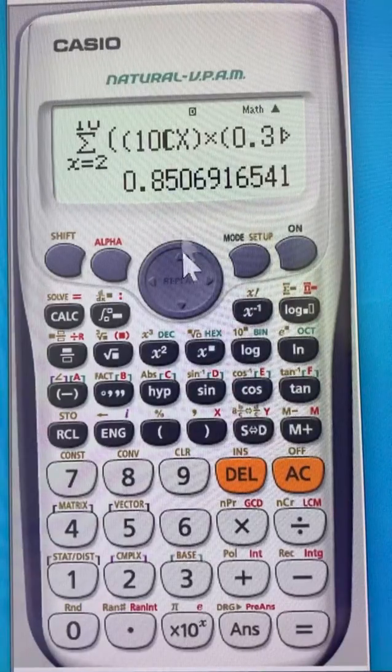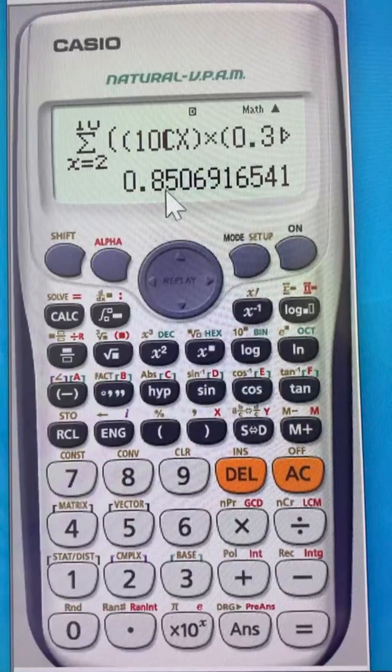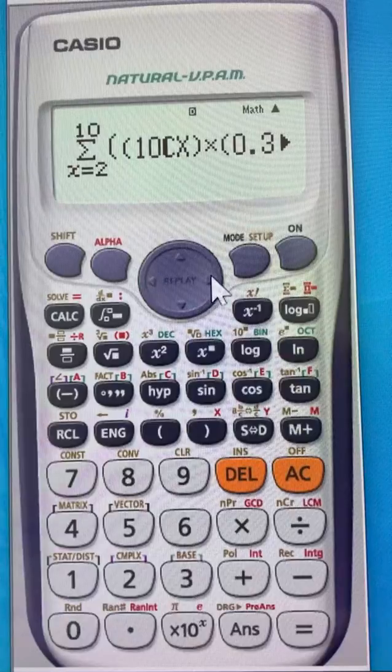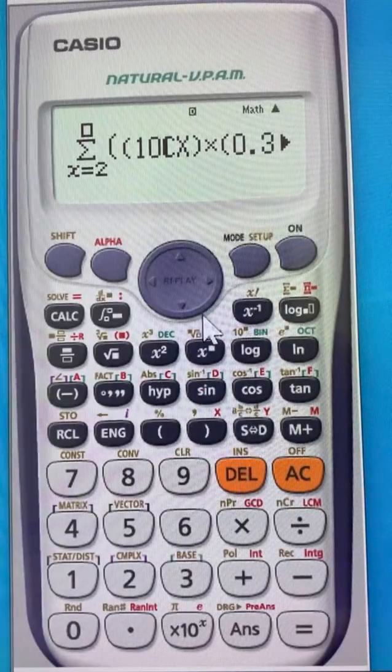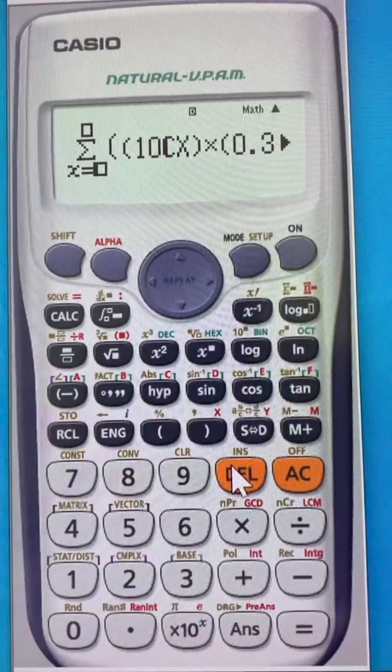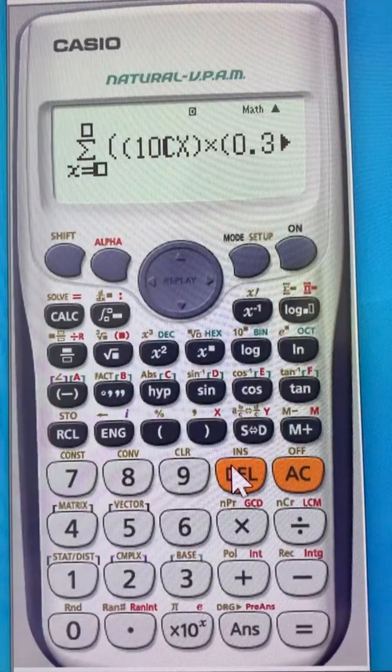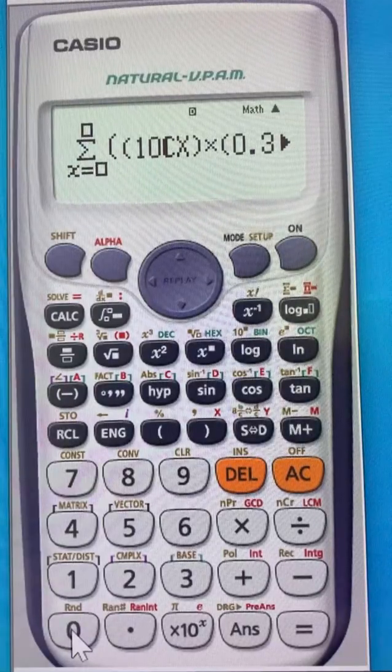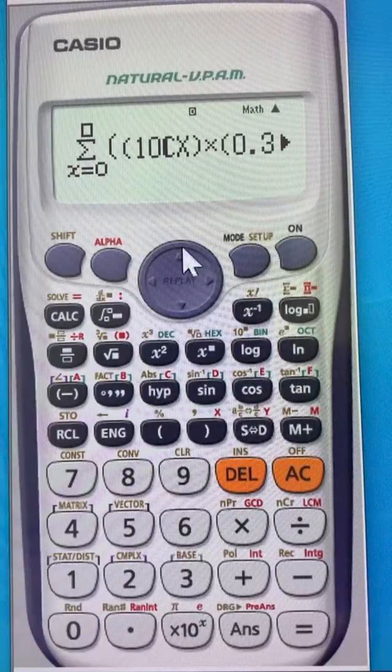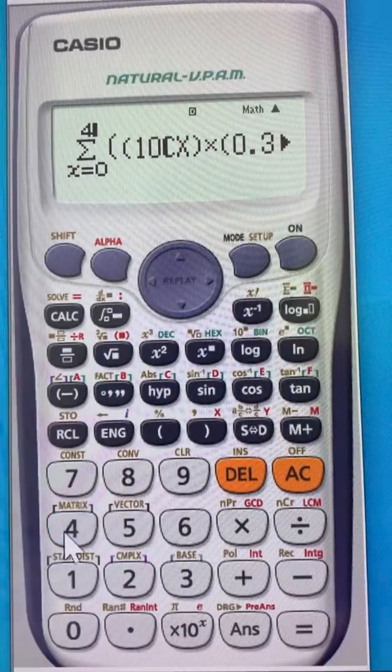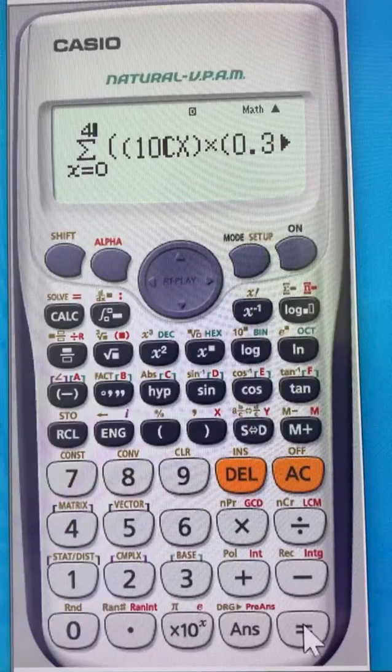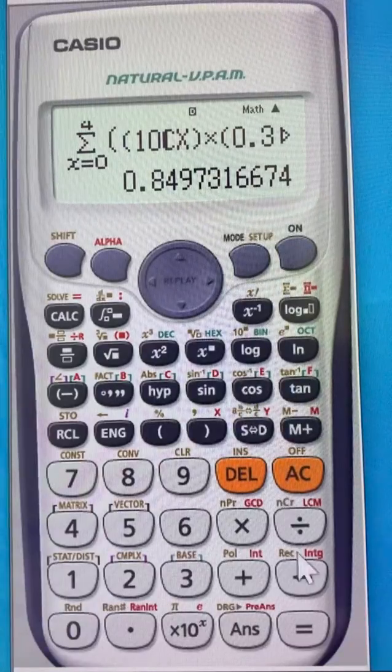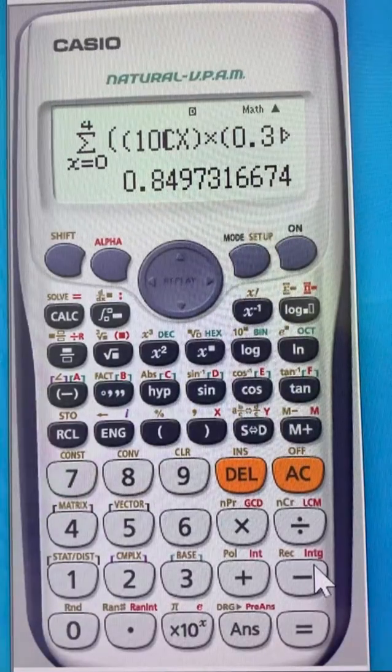So you hit equal. This is telling you that the probability is 85%. And I will do one more. So let's say that the question was, find the probability that X is at most 4. So if it's at most 4, always X starts from 0. And you want to have at most 4, so you stop at 4. And then hit equal. And that gives you the probability, which in this case is about 85%. And this is basically what it is.